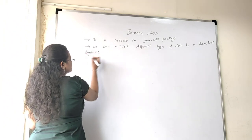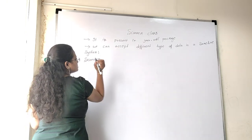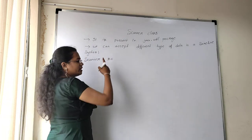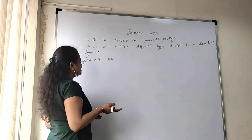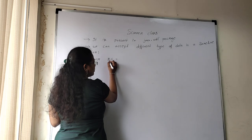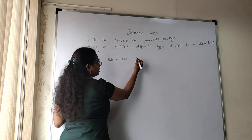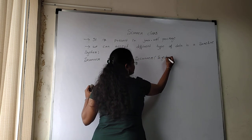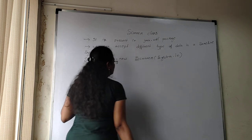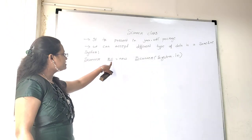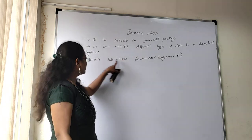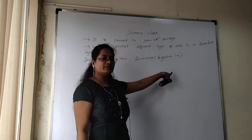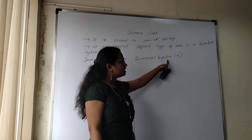So what is the syntax to represent Scanner class? Scanner is a predefined class, so 'S' should be capital. 'sc' is the object of the Scanner class — you can name it s1, s2, or sc. This object is created using the new operator: `Scanner sc = new Scanner(System.in)`. System.in is used to take data from the keyboard.